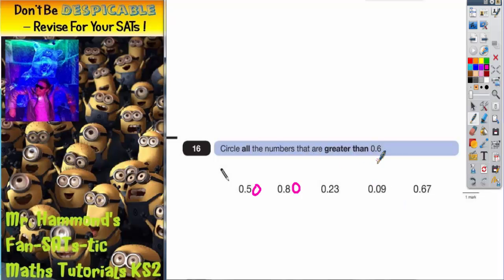0.6 would be the same as 0.60. So which of these decimals are greater than 0.60? Now it should be easier. 0.80 will be greater. And 0.67 would be greater.